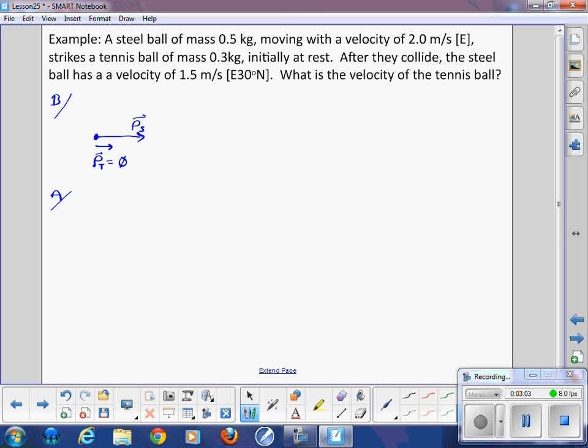So I'm not going to draw that vector. Because it's at rest, that means it has no momentum. I'll put it in for the first example, momentum for the tennis ball is 0. The A for after, what happens then? They collide. Steel ball has a velocity of 1.5 meters per second east, 30 degrees north. So there is momentum of the steel ball prime, the after collision. And we're looking for what happens to the tennis ball.